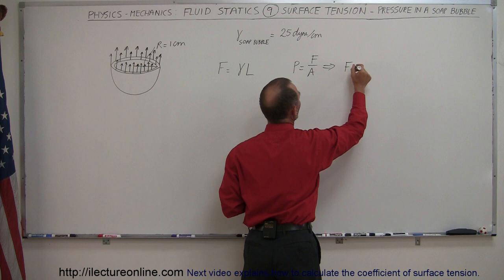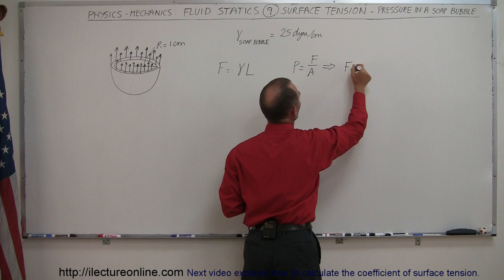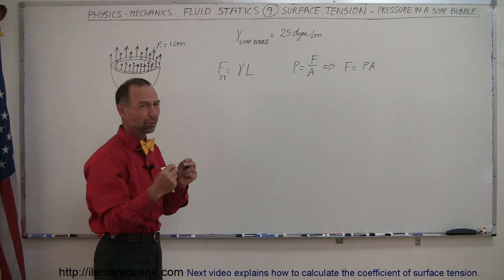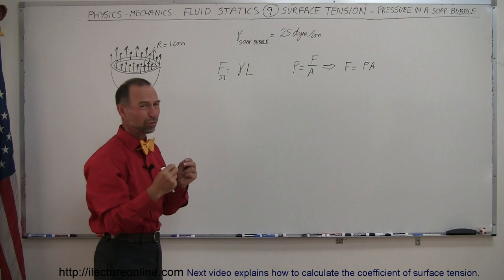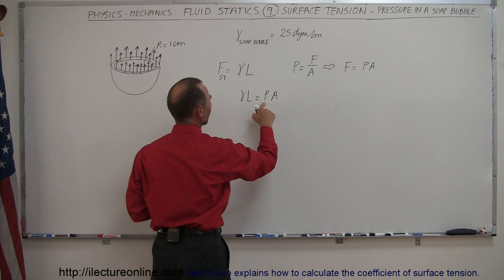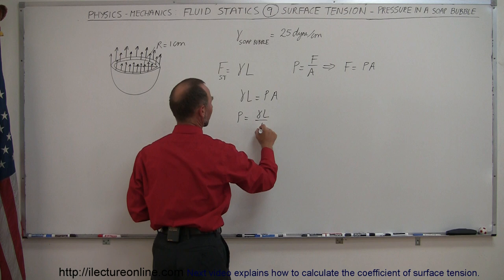Now what we can do is set the force of the surface tension equal to the force caused by the pressure. We have γ times L is equal to pressure times area. And since we want to know what the pressure is, we solve this for pressure. So pressure is equal to γL divided by the area.